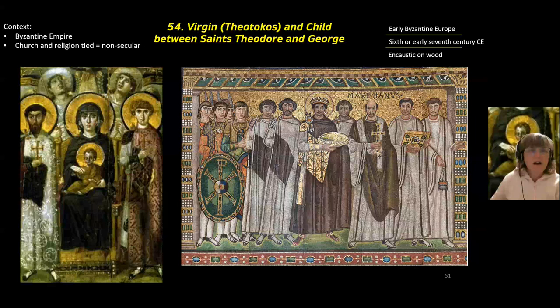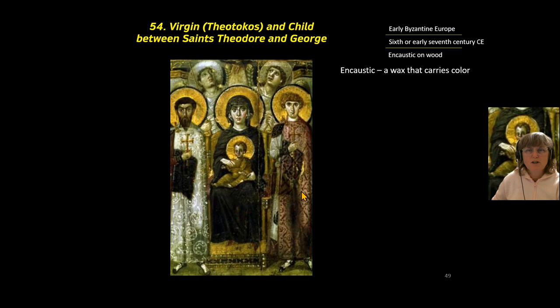This is piece 54, the Virgin Theotokos and Child between Saints Theodore and George — this is Theodore and this is George. This is made of encaustic on wood. Encaustic is a wax medium, and it's difficult to achieve this much detail with wax, so it's a very impressive piece in that way.